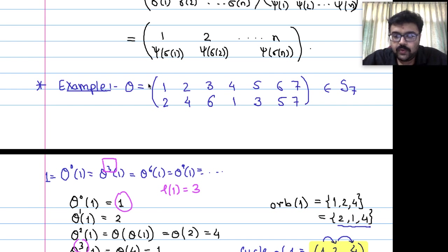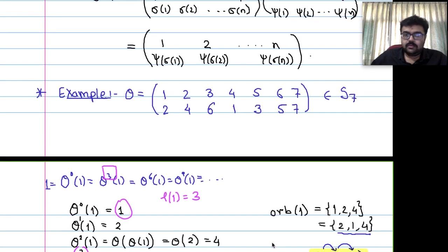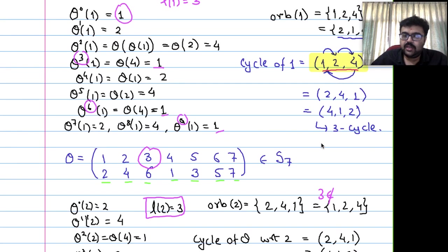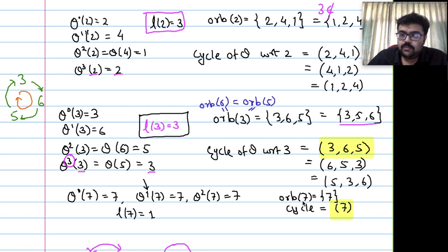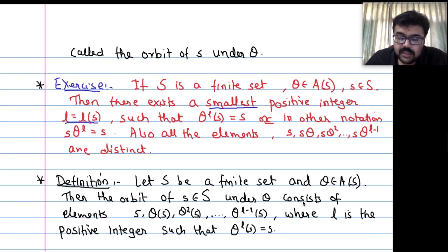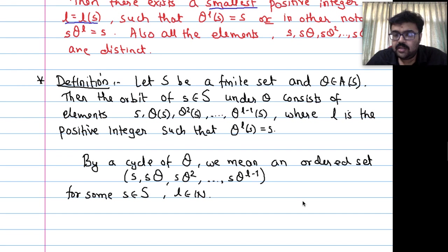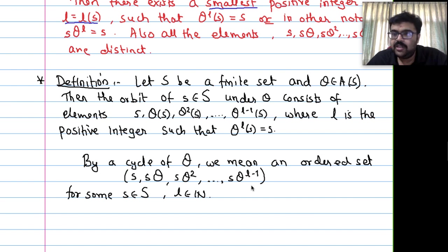In our example, theta has three cycles: (1, 2, 4), (3, 6, 5), and (7). Cycles are disjoint because they come from equivalence classes, and equivalence classes are either identical or disjoint. Since cycles come from equivalence classes, different cycles of theta are disjoint.